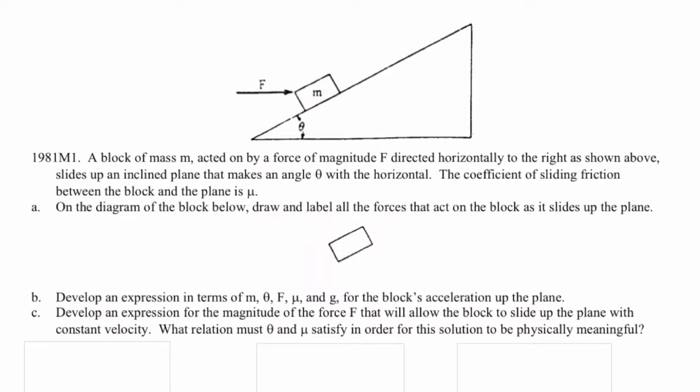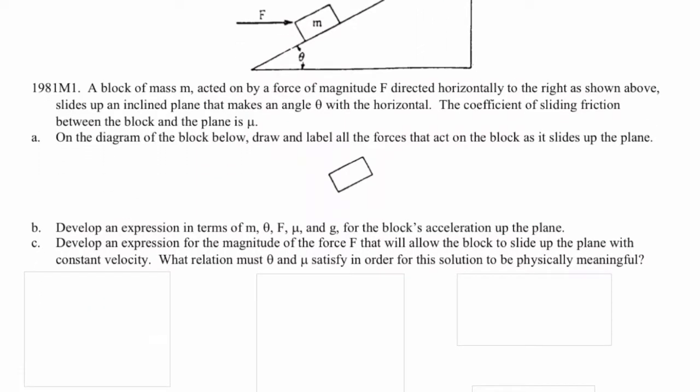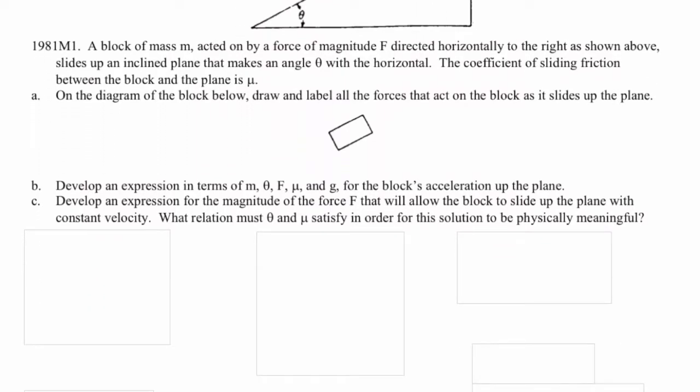Part A. On the diagram of the block below, draw and label all of the forces that act on the block as it slides up the incline. We have the force applied, the force of gravity, the force of friction, and the normal force.